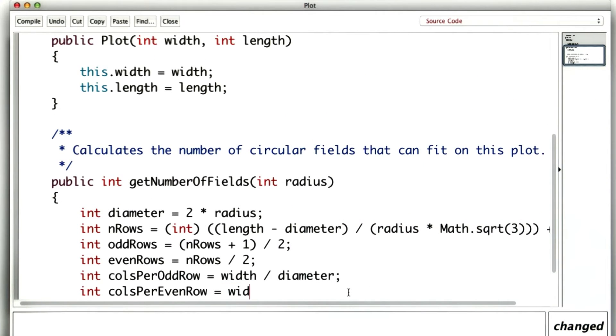The columns in an even row was the width, but we couldn't use that first space at the left. So we have to subtract off one radius before we divide to see how many diameters fit across.